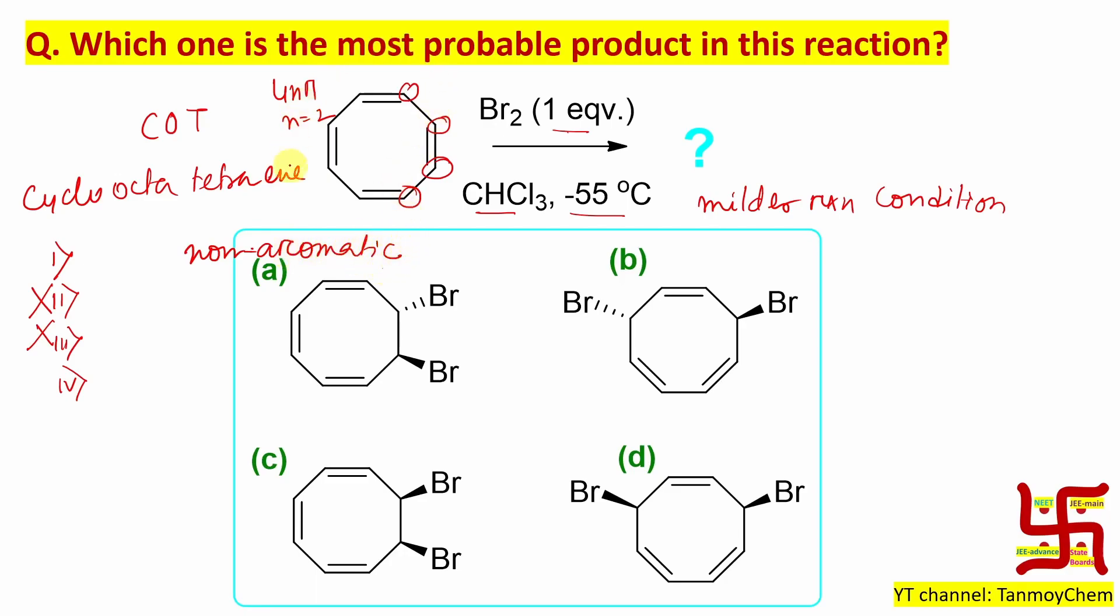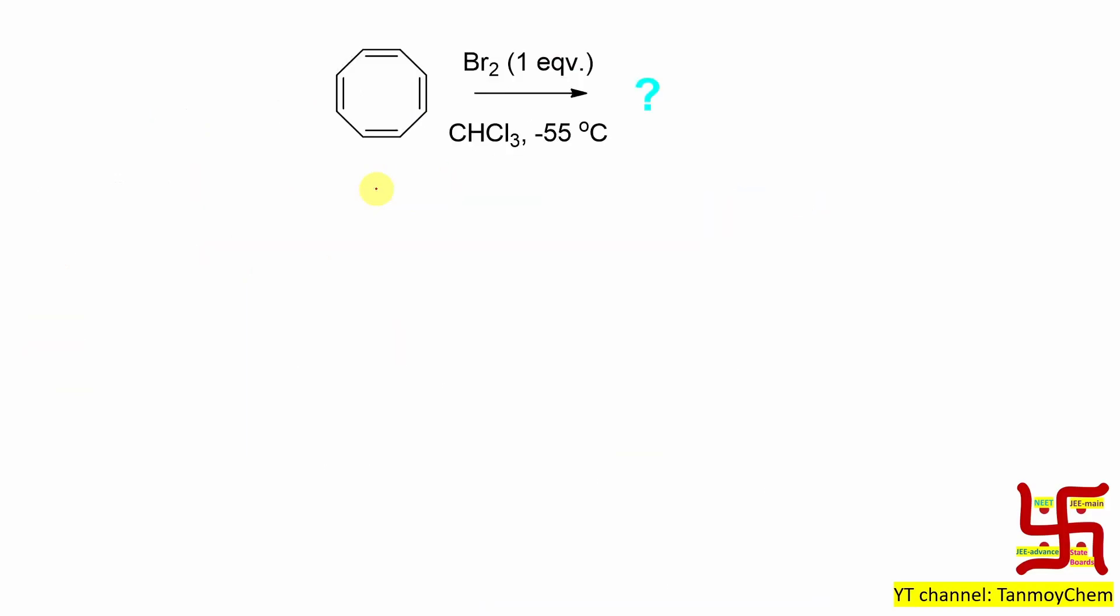So you can consider this COT molecule's double bonds are isolated alkenes. They are not in conjugation. And this thing could be understood more well by watching this structure. This is actually a boat structure. You can see all the double bonds - these are not in plane. So they are not in conjugation. And this is further proved by the bond distance.